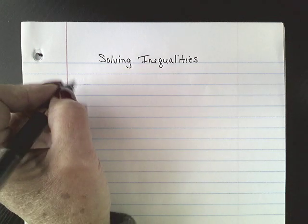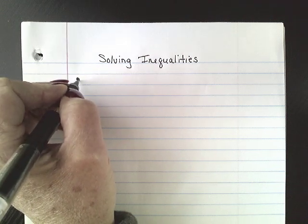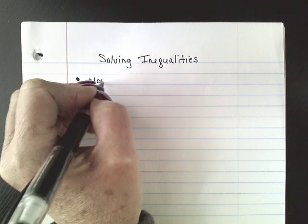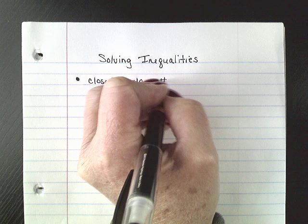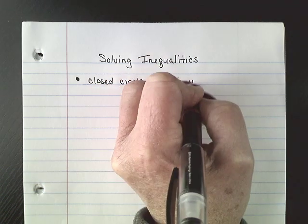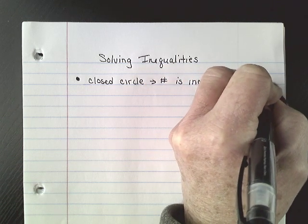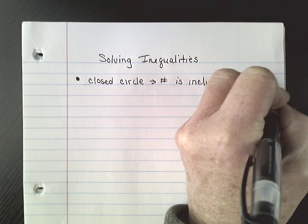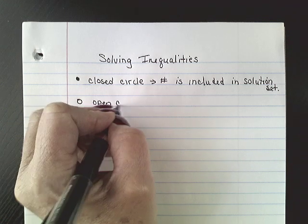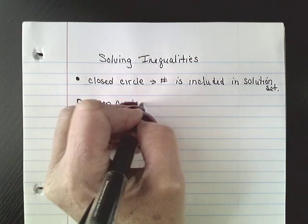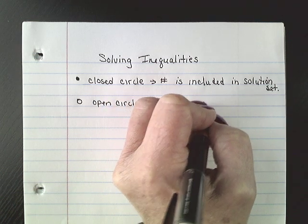Let's start with a couple of things you need to know when graphing. When graphing, we would have a closed circle on our number line, which means the number is included in the solution set. If it's an open circle, the number is not included in the solution set.